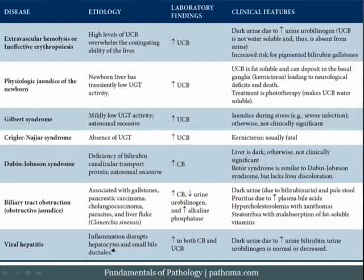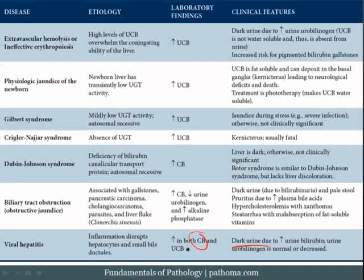The final cause of jaundice listed here is viral hepatitis. Viral hepatitis causes inflammation and disruption of the hepatocytes along with the small bile ductules, resulting in an increase in both conjugated and unconjugated bilirubin — unconjugated because hepatocytes are damaged, and conjugated because the small bile ductules are damaged. The urine will be dark due to water-soluble conjugated bilirubin leaking out. Importantly, the urine urobilinogen will be normal or decreased, because less conjugated bilirubin is being delivered to the duodenum for conversion to urobilinogen.